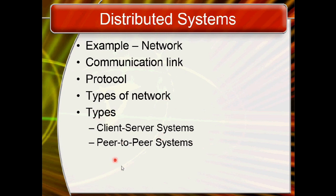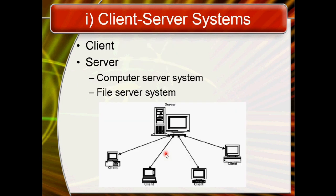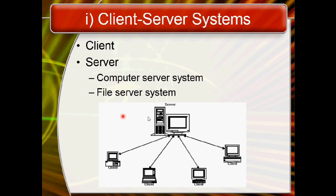Distributed systems are classified into two types: client-server systems and peer-to-peer systems. In a client-server system, the client sends a request to the server, and the server provides services in the form of a reply. For example, in a file server system, the client sends a request and the server replies with the requested file.